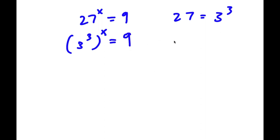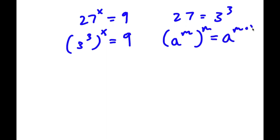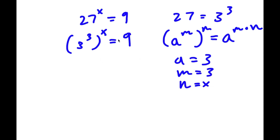Now if I have something in the form a to the power of m to the power of n, this is actually equal to a to the power of m times n. So 3 to the power of 3 to the power of x — we can think of a as 3, m as 3, and n as x. This would be equal to 3 to the power of 3 times x. 3 times x is simply 3x, so I have 3 to the power of 3x is equal to 9.